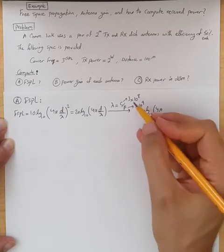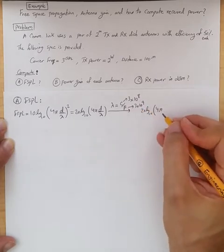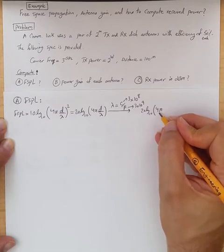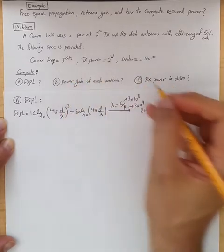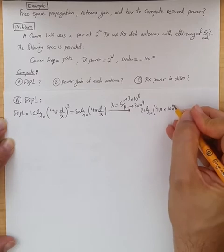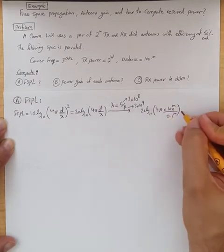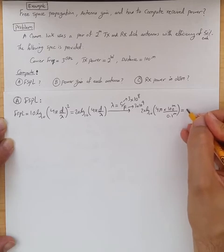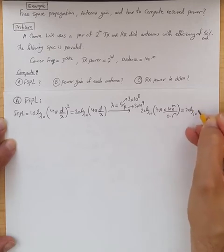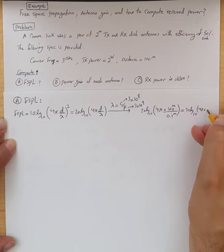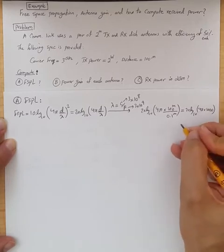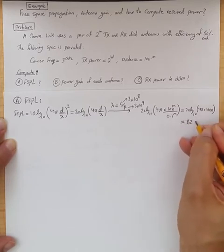These two guys divided, so it would be, this distance is 100 meters, and 0.1 meter is the lambda. So we have 20 log 10 of (4π times 1,000), this is roughly 82 dB.